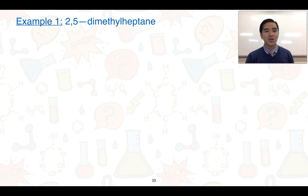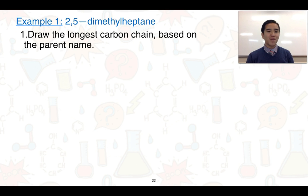Our first example to learn about drawing, we've got here 2,5-dimethylheptane. We're going to start off by drawing the longest carbon chain based on the parent name. The parent name is heptane. That tells me that there are seven carbon atoms in the longest chain, and that it's an alkane.